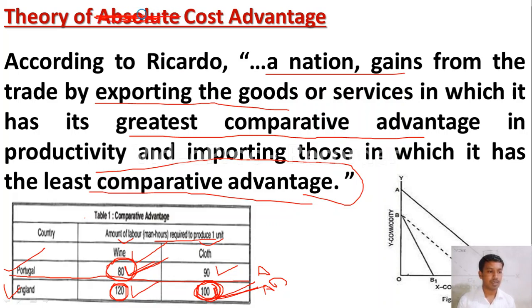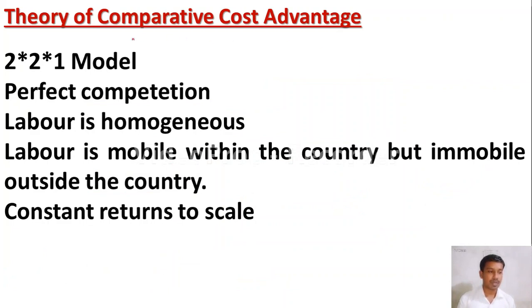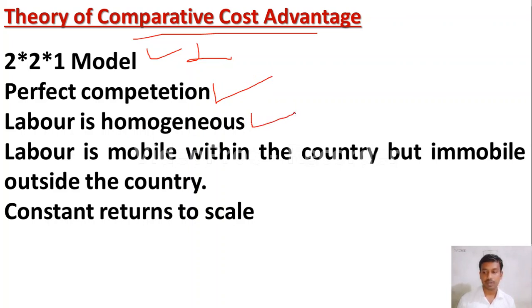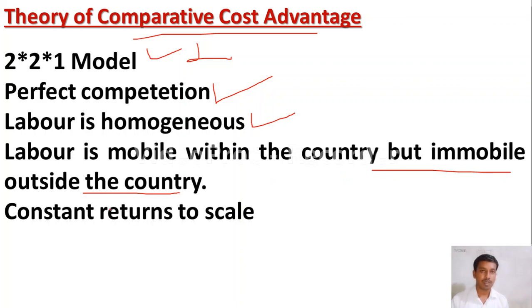The assumptions of comparative cost advantage theory are: it is a 2x2x1 model — two countries, two commodities, and one factor of production (labour); perfect competition prevails in the market; labour is a homogeneous factor; labour is mobile within a country but immobile outside the country, meaning labour cannot move to another country; and constant returns to scale apply in the production process.